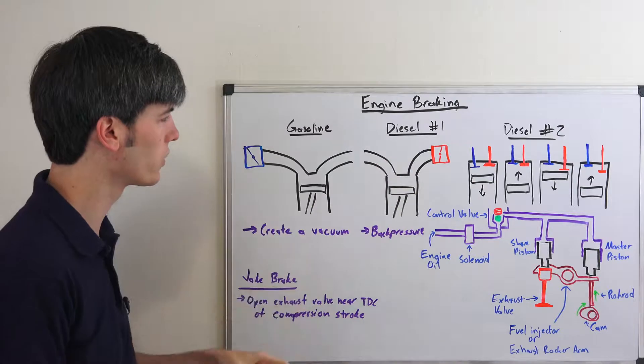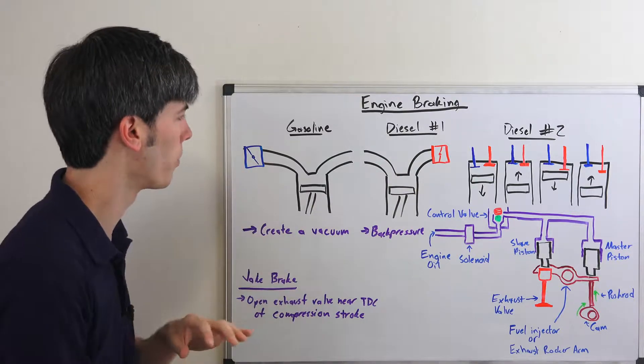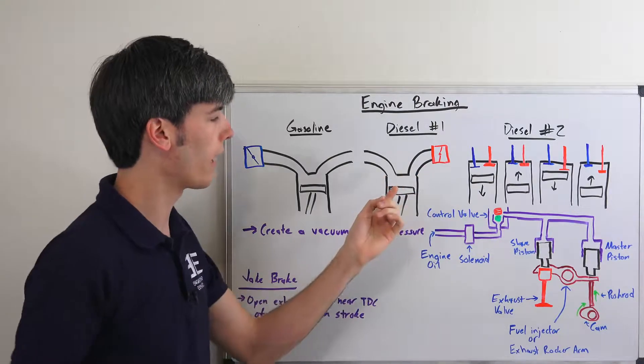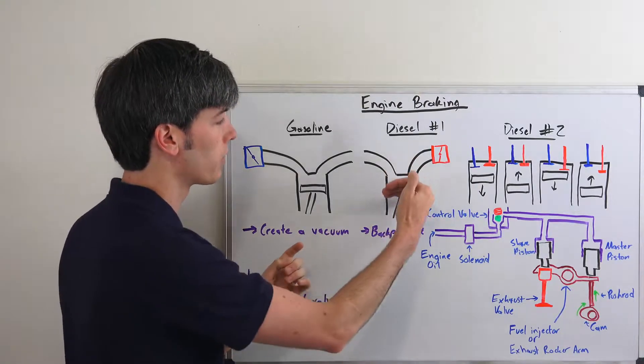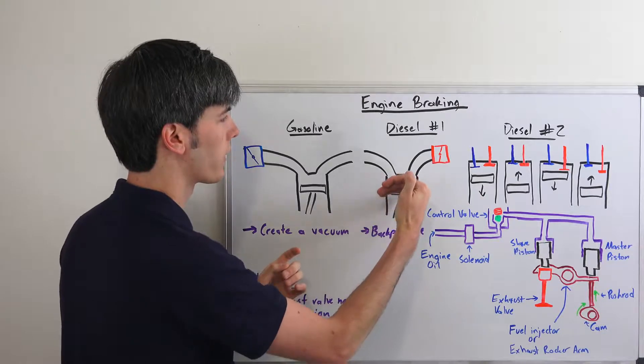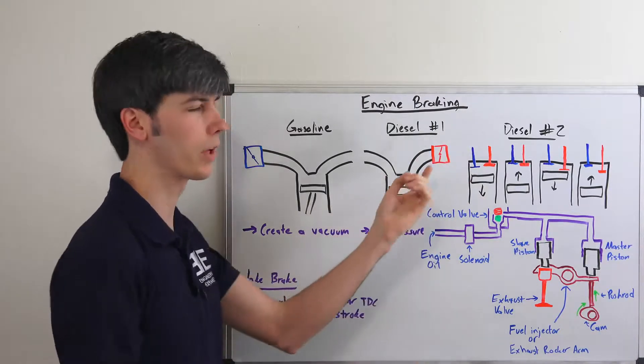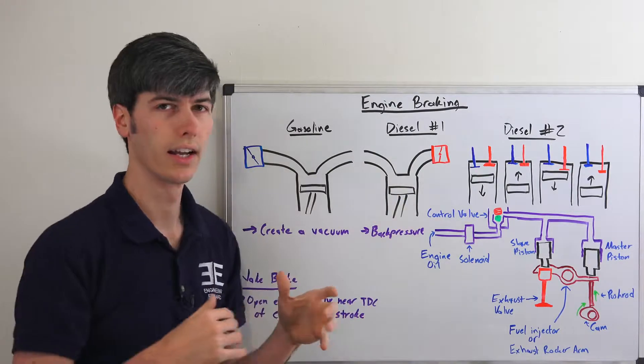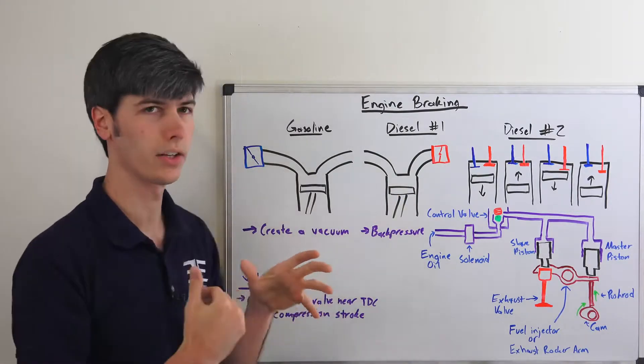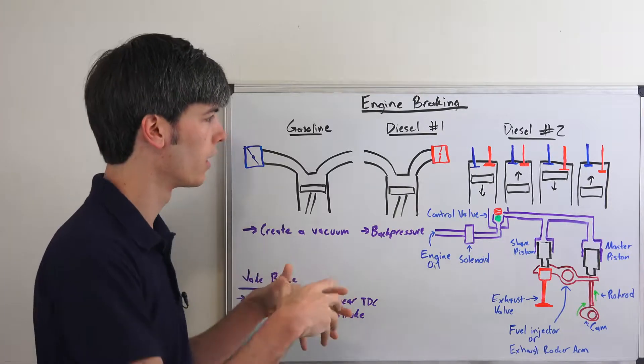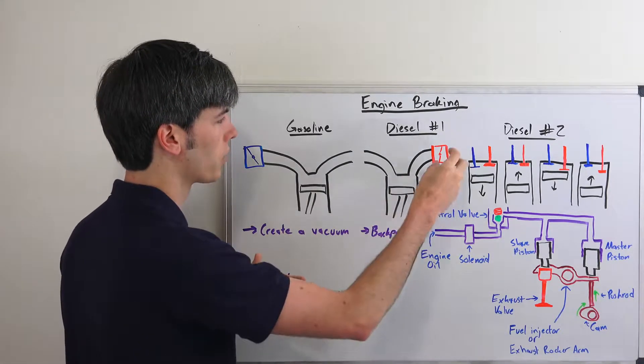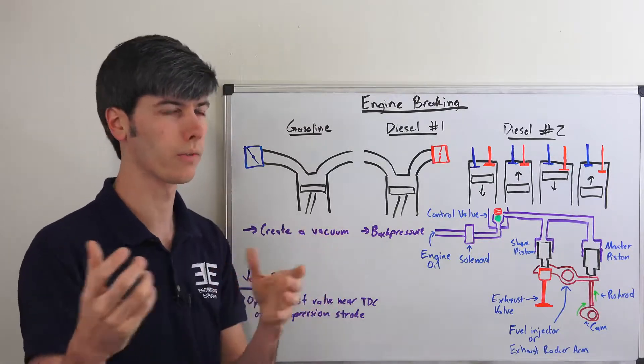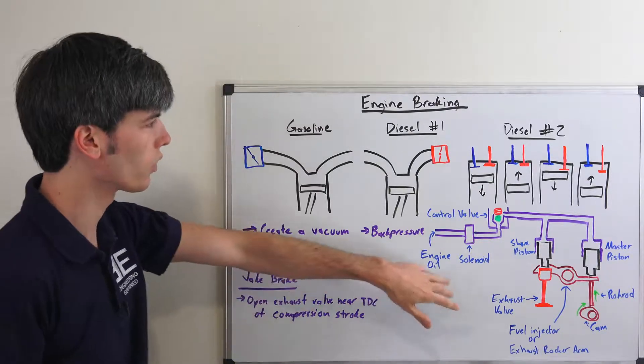Now in a diesel engine, traditionally you won't have throttle bodies. And so because of that, what they've done is they've added one on the exhaust side. So after your power stroke, your piston comes down and then it's pushing that exhaust out. Well, what you'll do is you'll have this throttle body which will close up and create back pressure. And that resists the engine, and so it's going to slow down the vehicle because the engine is connected, once you're in gear, to the wheels. And so that motion is going to resist, because of the back pressure, your vehicle from moving forward, so your vehicle is going to slow down.